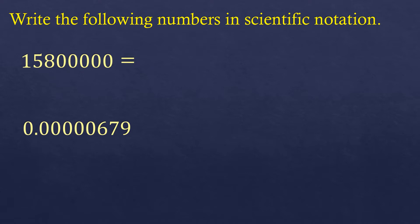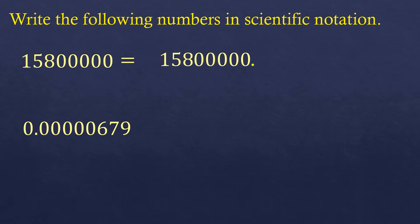This number is 15,800,000 and we'll convert it into scientific notation. We're going to place the imaginary decimal point because we are going to move it. The purpose of scientific notation is to lessen the number of zeros, especially for very large numbers or very small numbers.